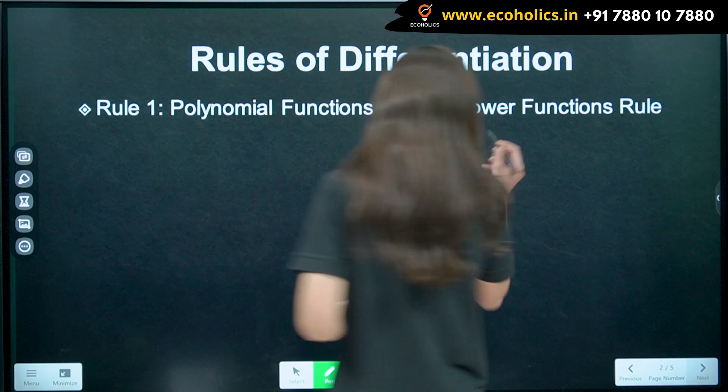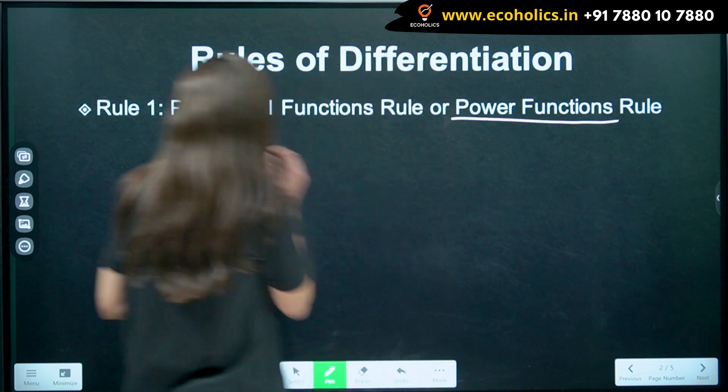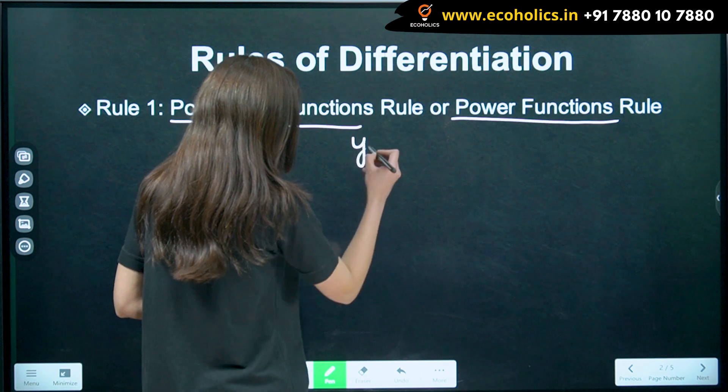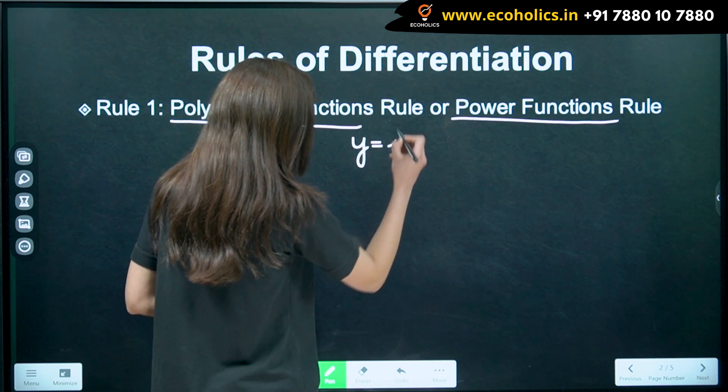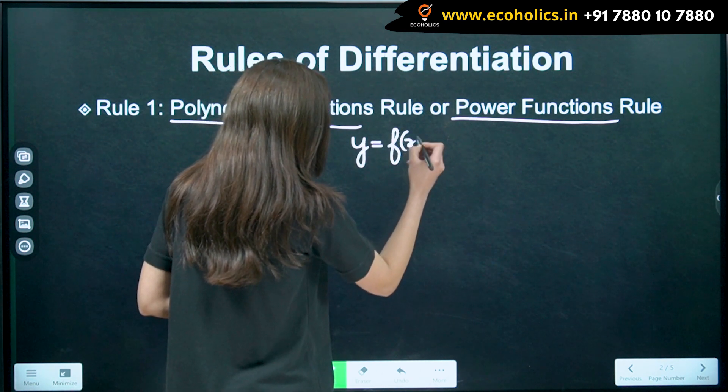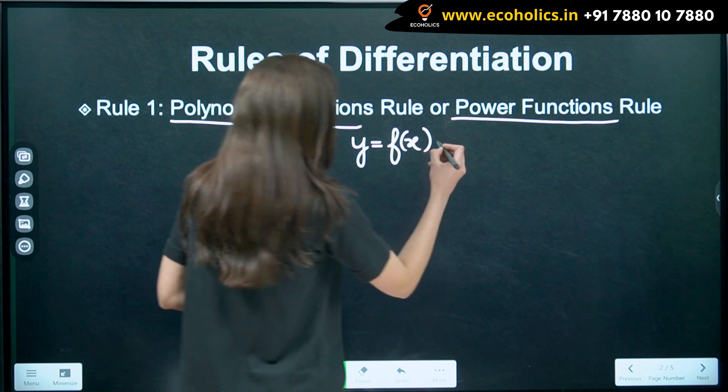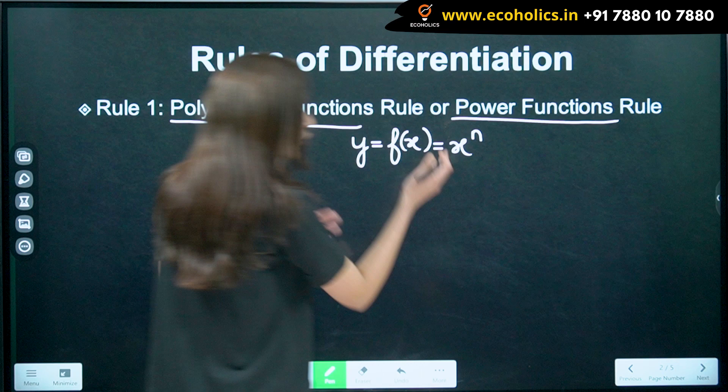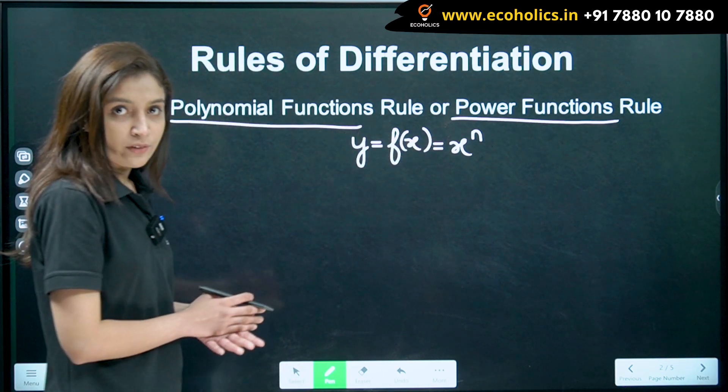Now, how do we represent our power function or polynomial function? y is equal to f of x which is equal to x raised to n. This represents our power function or polynomial function.